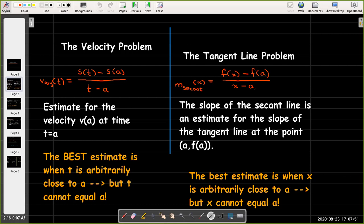So we want to formalize that, because really the best estimate in either case is when t is arbitrarily close to a, or x is arbitrarily close to a. So we need to formally say, well what number would the average velocity approach as t approaches a?